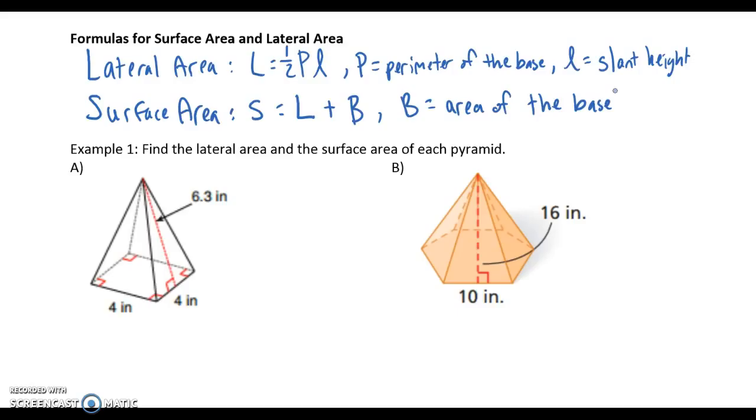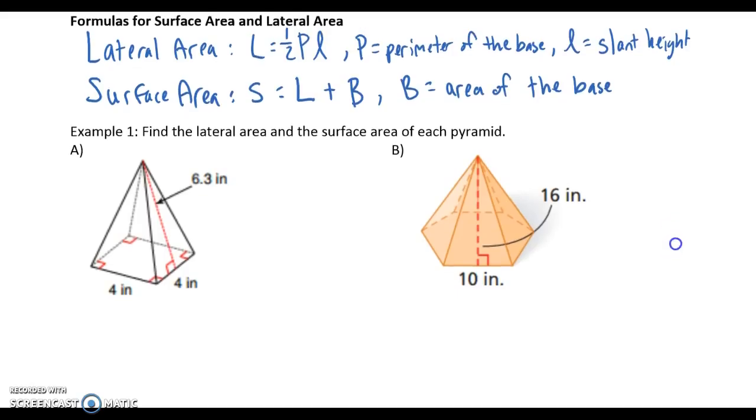Let's do a couple examples. So example one, I want to find the lateral and surface area of each pyramid. So we want to make sure we identify the base. Always start with your base. So the base is the bottom, where you can imagine the pyramid sitting on. Or if you have a triangular pyramid, then your base will also be a triangle. See how I highlighted this base? We've got a square pyramid here.